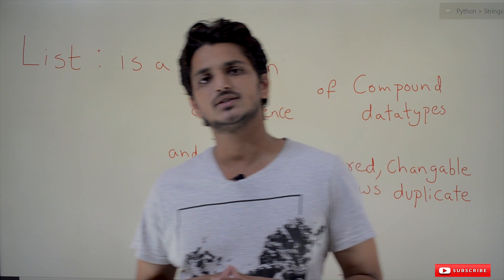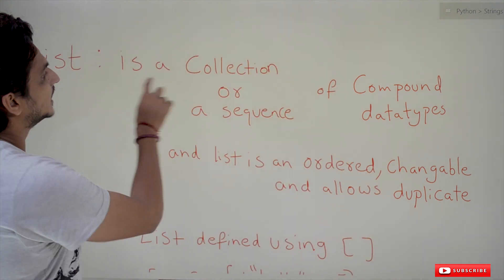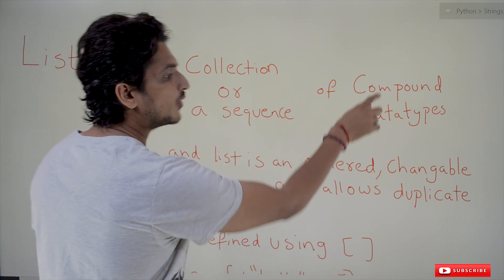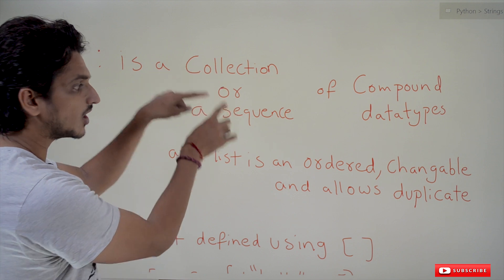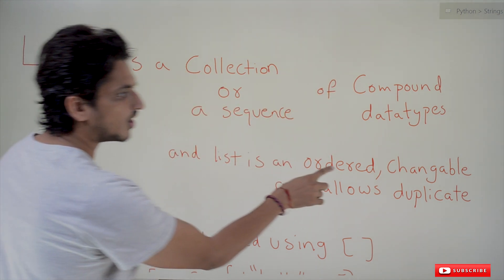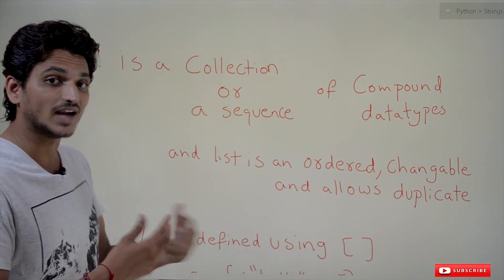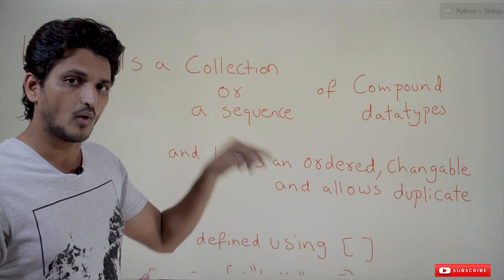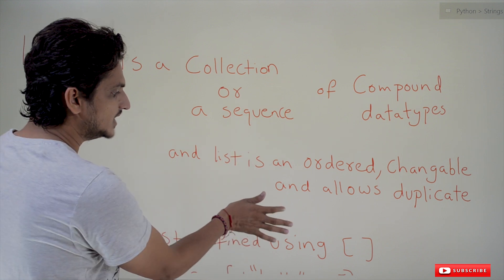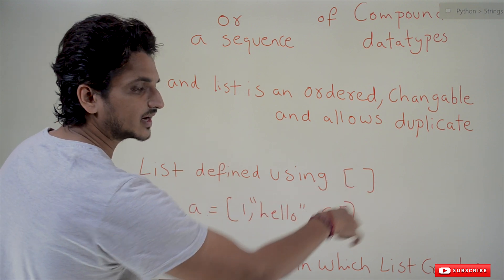Coming to today's class, a list is an ordered collection or a sequence of compound data types. A list is ordered, changeable, and allows duplicates. We will understand these concepts one by one. A list can be defined using square brackets.